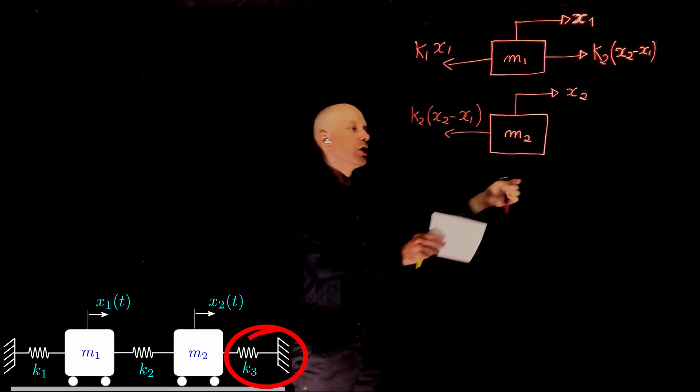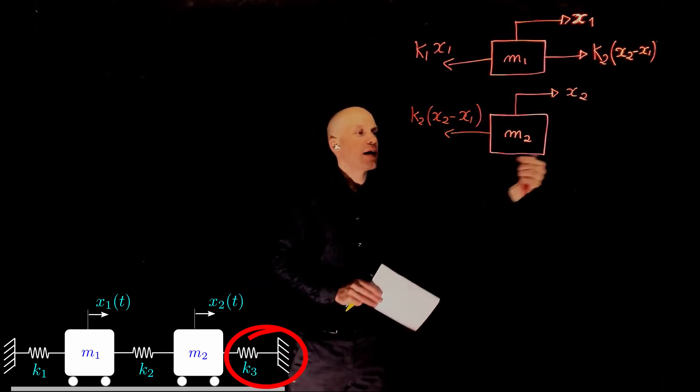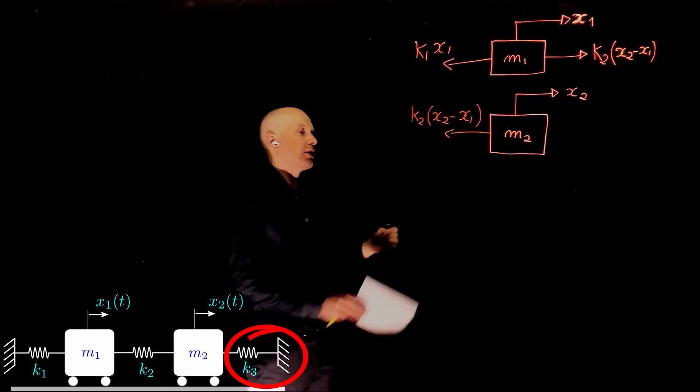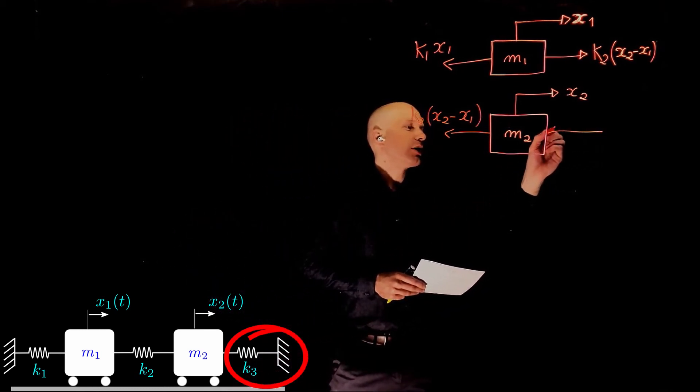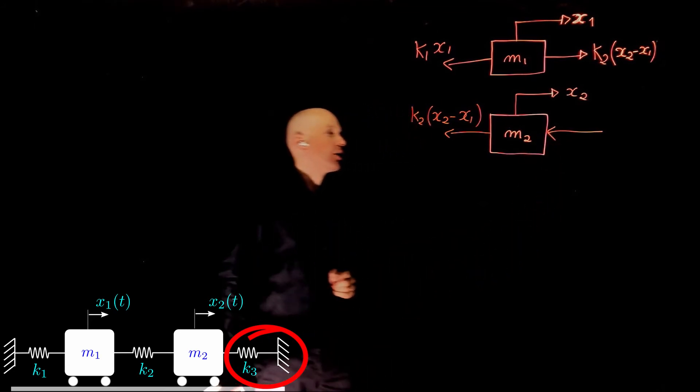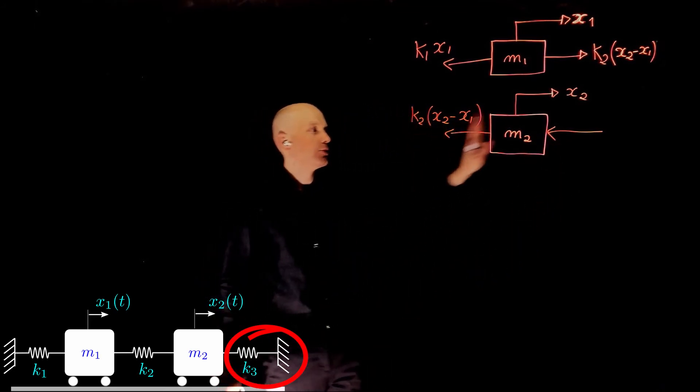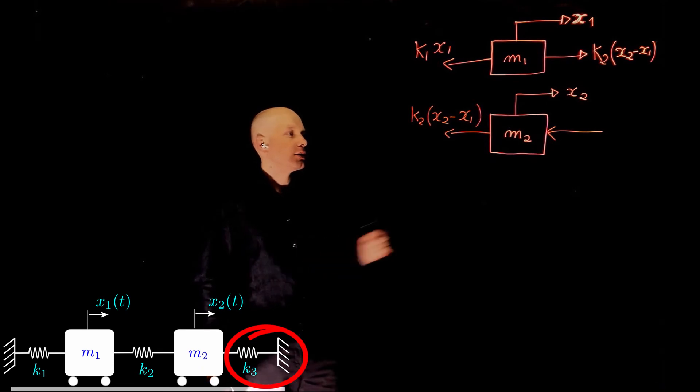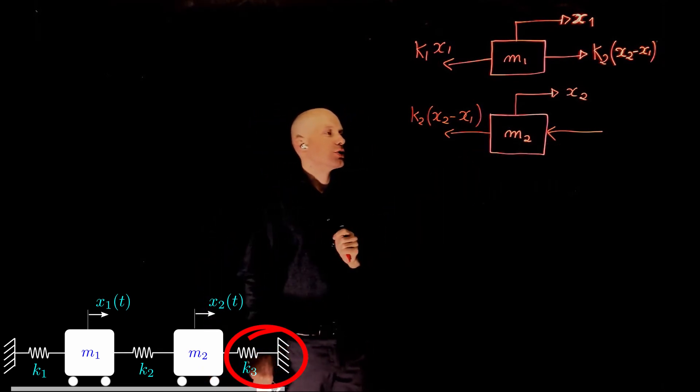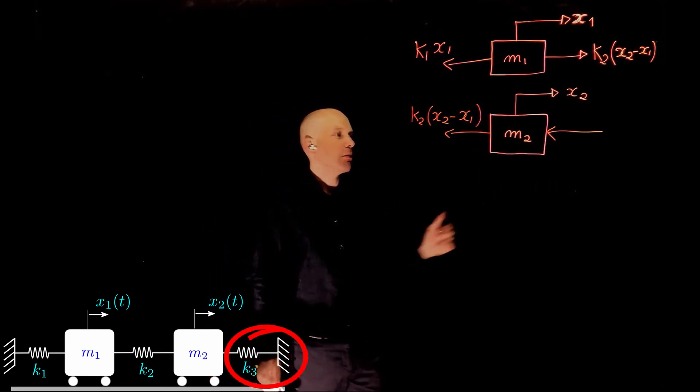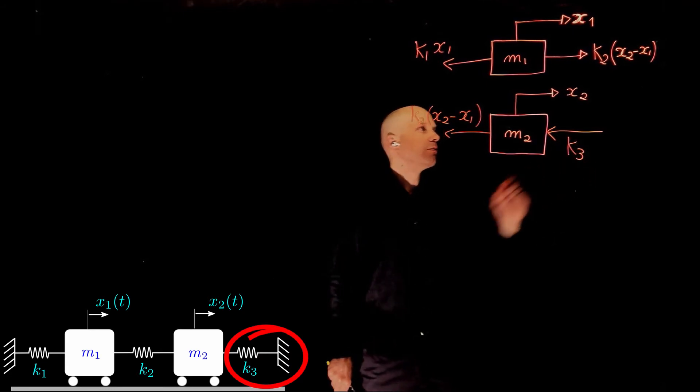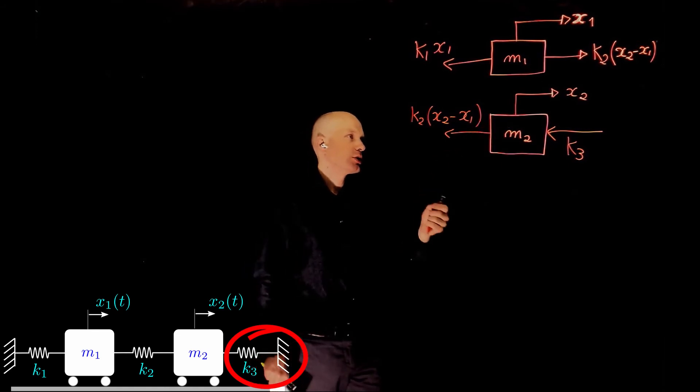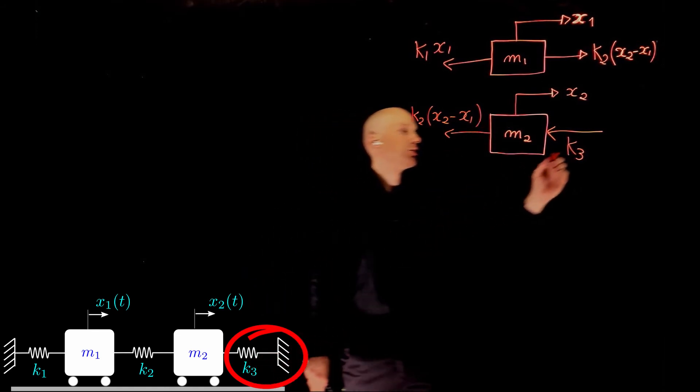So if you move m2, that spring is acting against motion and is pushing the mass back. So the force that spring k3 applies to m2 as m2 moves to the right is toward the left. And the magnitude here is k3 times the displacement of that spring, which in this case is simply x2.